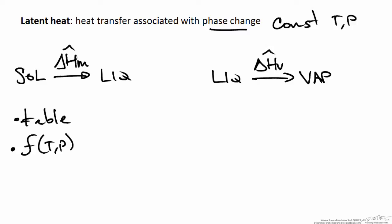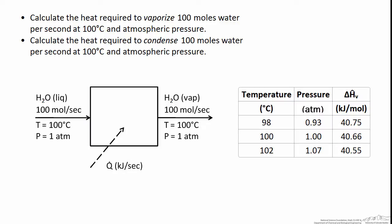As an example of how to use this data, consider the vaporization of water. We want to calculate the heat required to vaporize 100 moles of water per second at 100°C and atmospheric pressure, and also the heat required to condense 100 moles per second at the same conditions. The vaporization process is illustrated in a flow chart, and we want Q in kilojoules per second. Representative data pulled from the appendices of Felder and Rousseau shows the heat of vaporization at 100°C and 1 atmosphere is 40.66 kilojoules per mole.